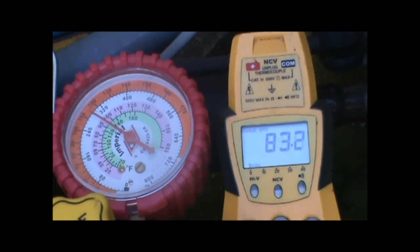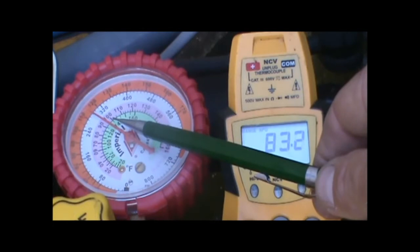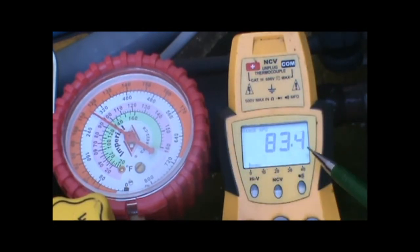To recap, for sub-cooling we measure the saturation temperature as indicated on the gauge, and from that we subtract the actual physical temperature of the high side refrigeration line to get the sub-cooling.